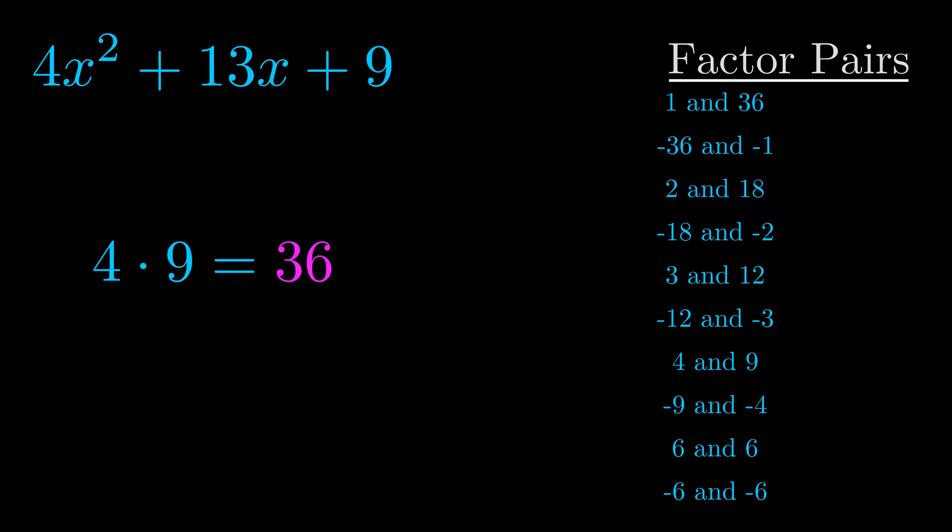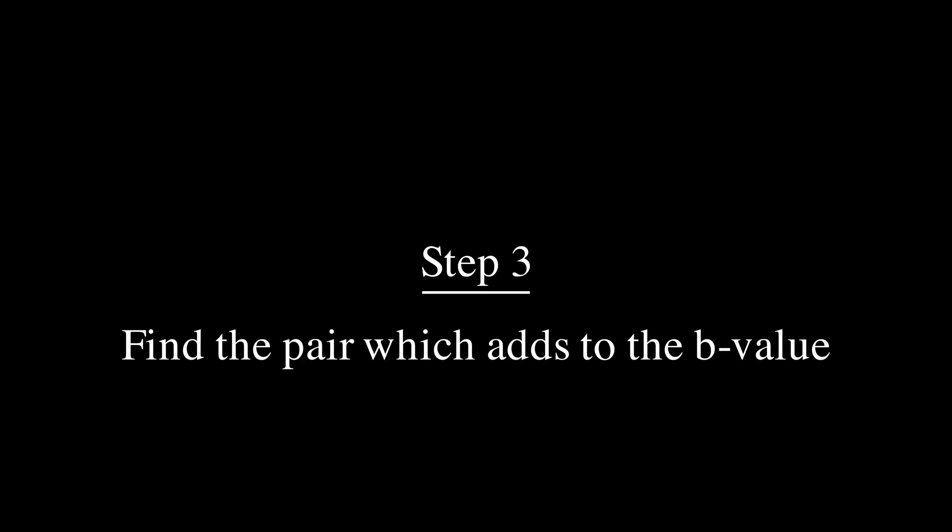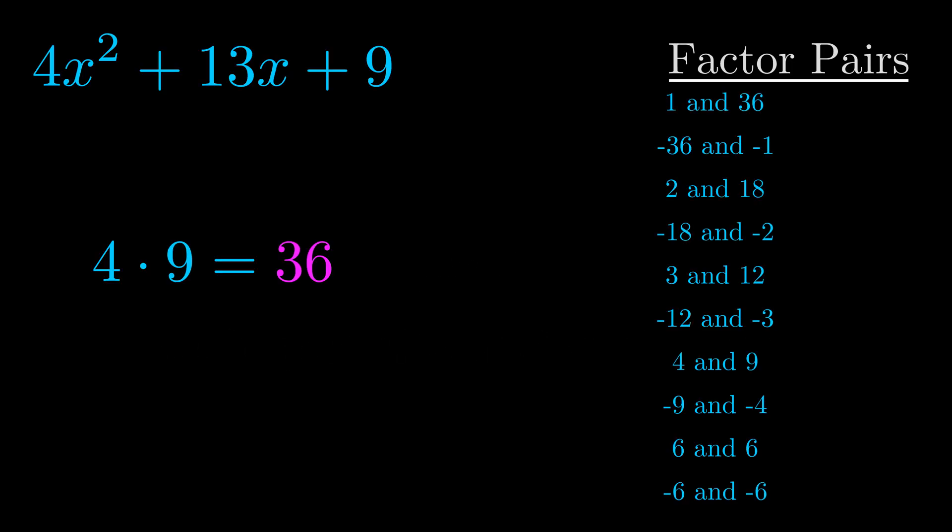Now once you have these factor pairs the goal is to find which of these pairs adds to the b value. The b value is the coefficient on the x term. That's the middle term, the one that we haven't done anything with yet. And really this is the only factor pair that we need.